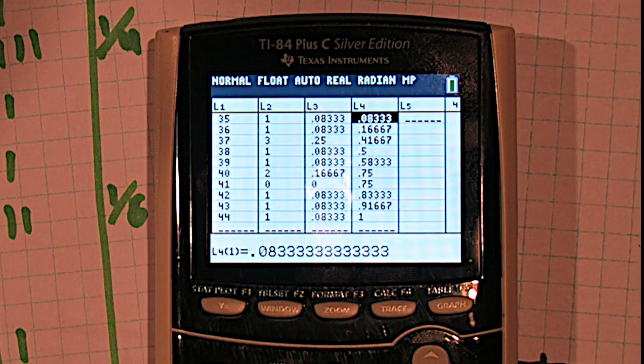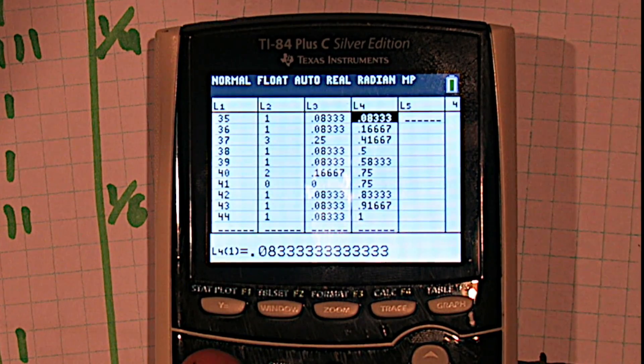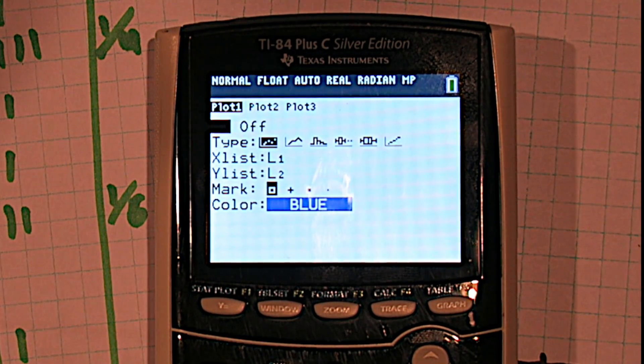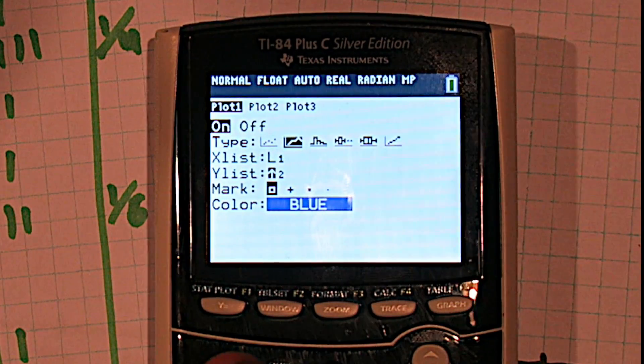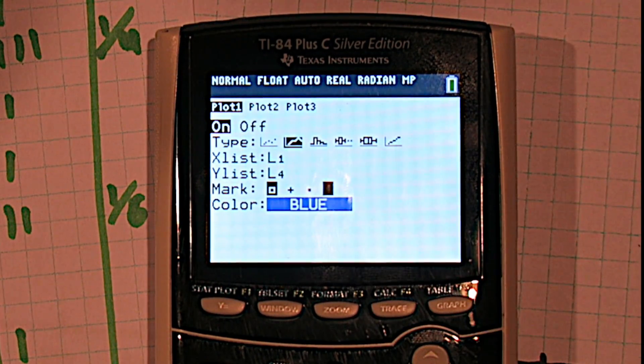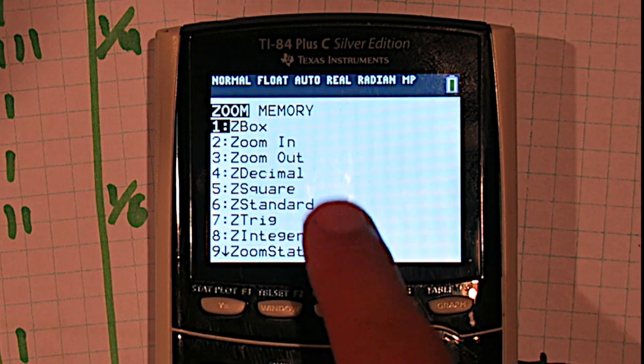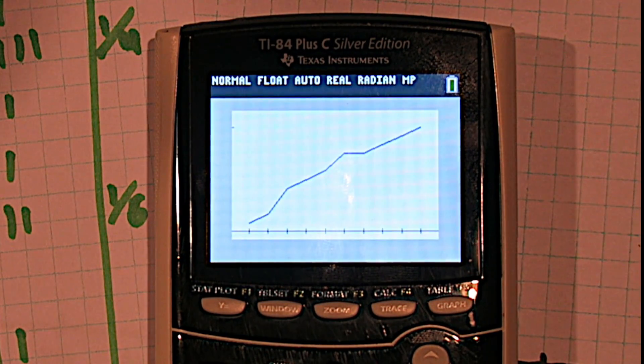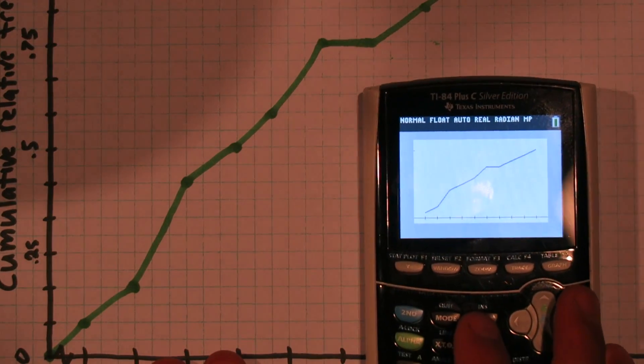Now we're ready to make our ogive. If you press second and y-equals to get to the stat plot menu, we can press enter, turn stat plot 1 on, and choose this second option with the lines. We're going to use list 1 and list 4. I like to use this last option here. You can change the color if you want. Now before I press graph, I'm going to press zoom, and go down to zoom 9, which is zoom stat. Here we go. This is our ogive. See, it matches the one we created by hand.